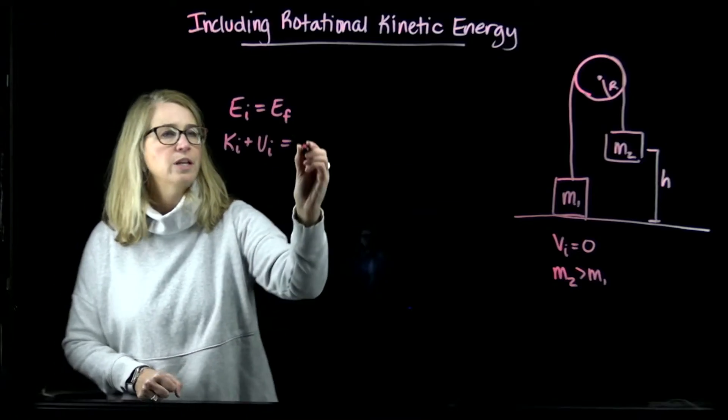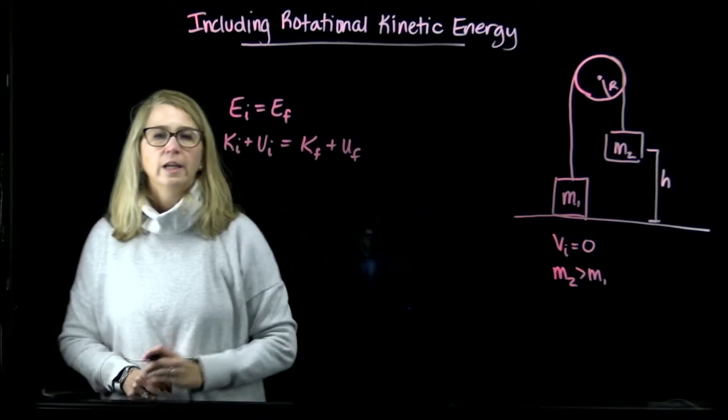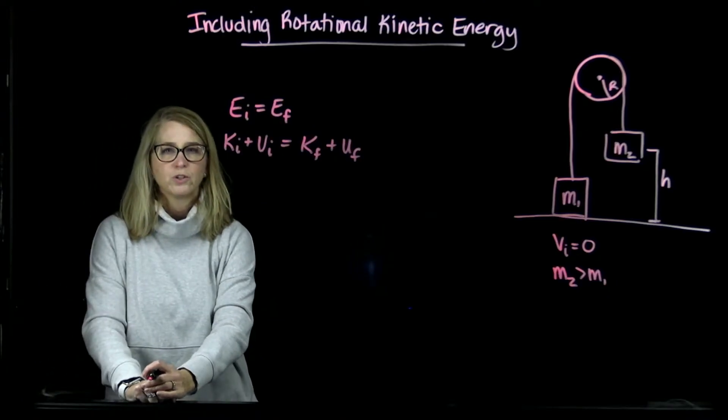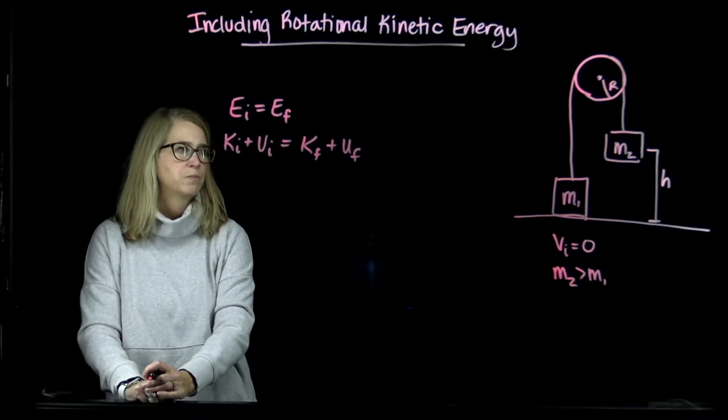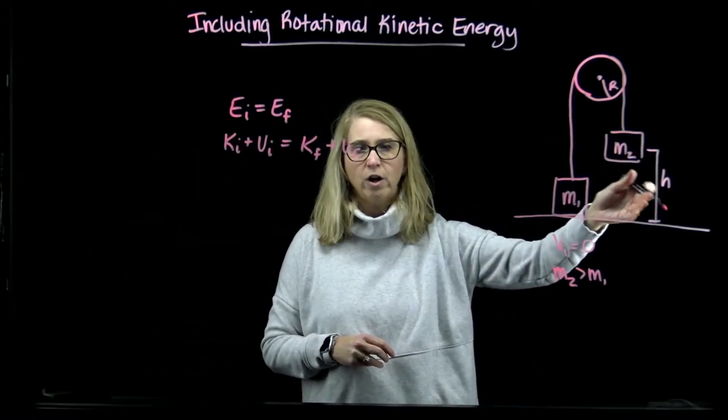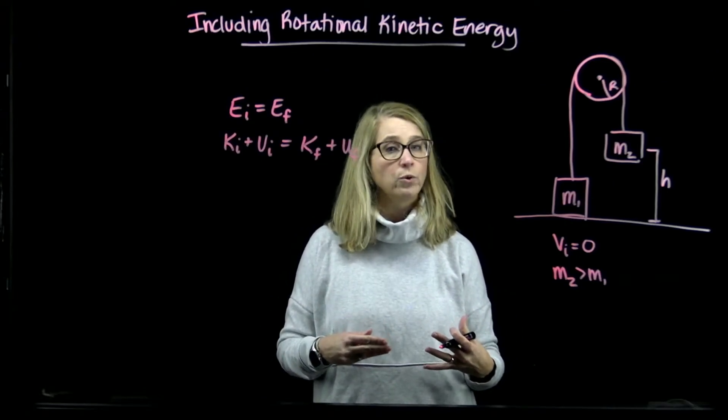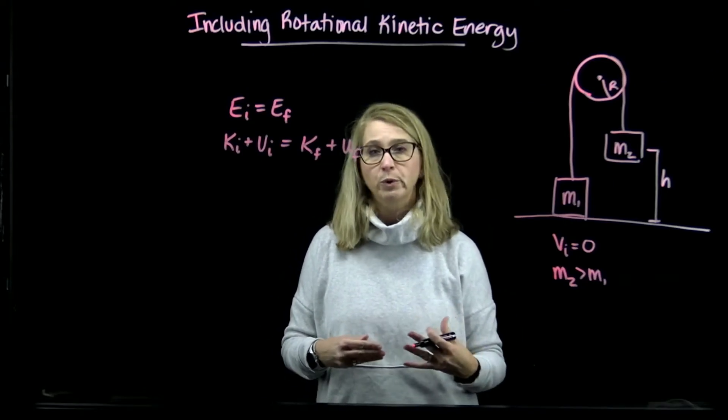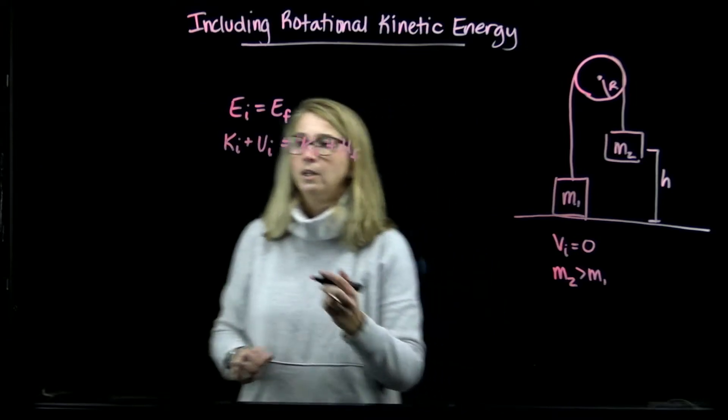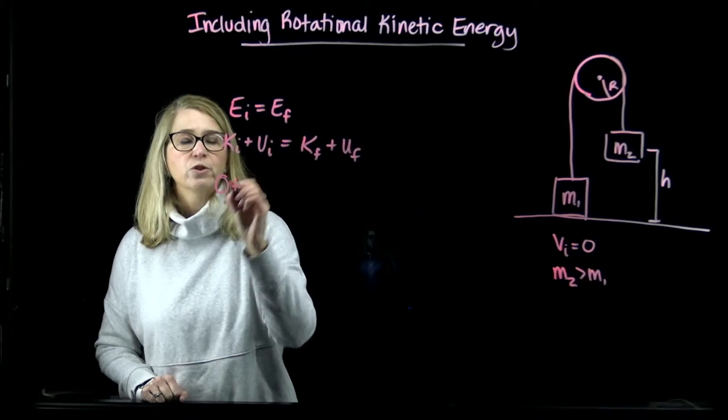We're going to start off with the same idea, conservation of energy, where the energy could be thought of as two different types: kinetic and potential. Let's think about what our initial situation is and what our final situation is. Initially, mass 2 is at a height of h off the ground, nothing is moving.